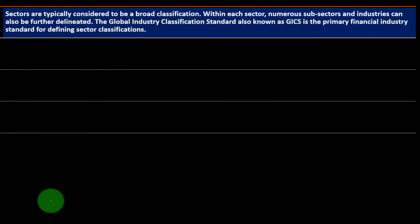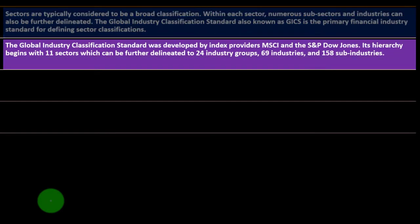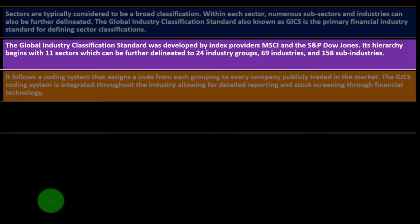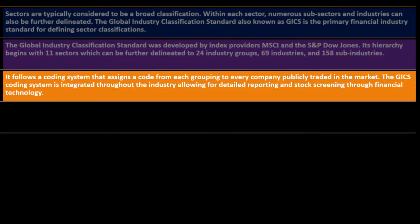Sectors are typically considered a broad classification. Within each sector, numerous sub-sectors and industries can be further delineated. The Global Industry Classification Standard, also known as GICS, is the primary financial industry standard for defining sector classifications. Developed by index providers MSCI and S&P Dow Jones, its hierarchy begins with 11 sectors, which can be further delineated into 24 industry groups, 69 industries, and 158 sub-industries. It follows a coding system that assigns a code to every publicly traded company.